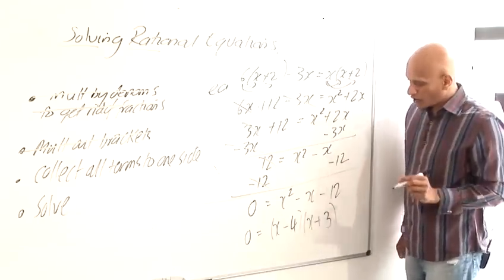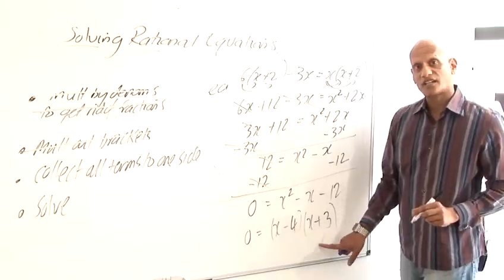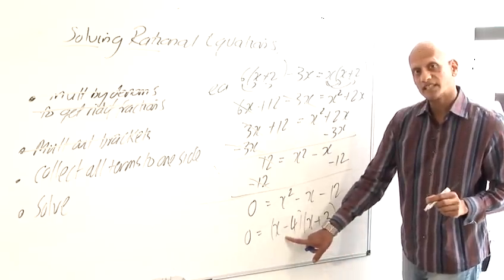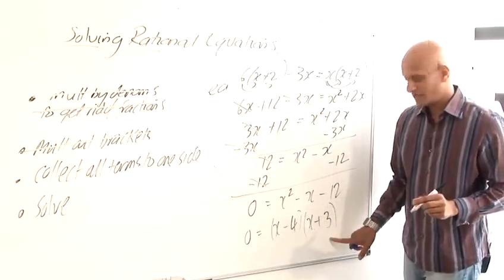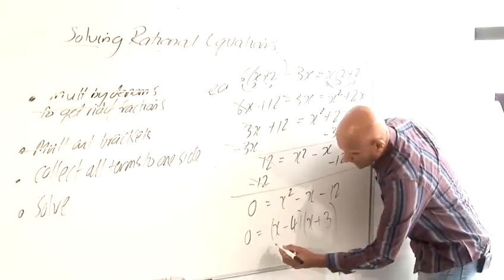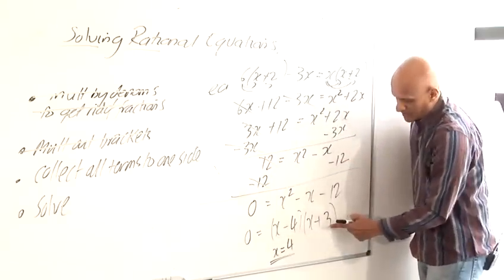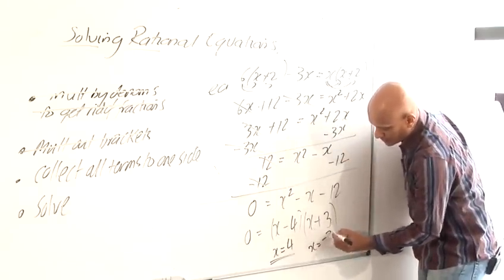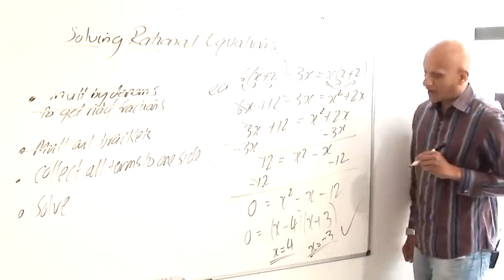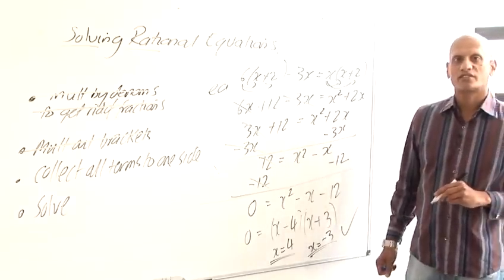And when you've got your quadratic equal to 0 and factorise, you know that either the first factor has to be 0 or the second factor has to be 0. So if x minus 4 is 0, x would have to be 4. And if x plus 3 is 0, then x would have to be minus 3. And so those are my answers. And that's my rational equation solved.